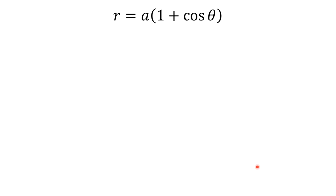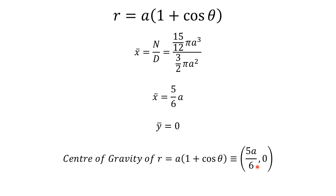And therefore x bar will be 5 by 6 a, and we already knew y bar is equal to 0. Therefore, center of gravity for the cardioid r equals a into bracket 1 plus cos theta is 5a upon 6 comma 0. So this is how we can find center of gravity for a plane lamina. Thank you.